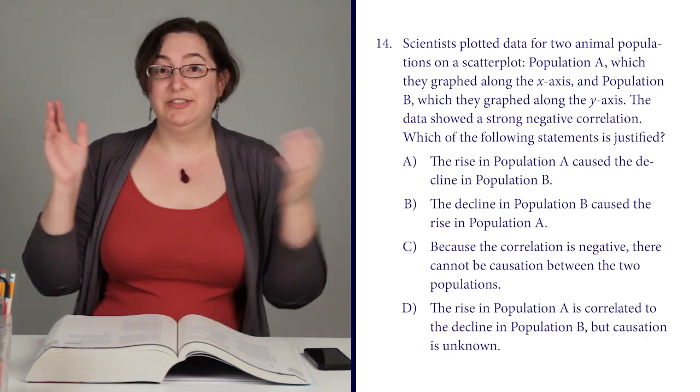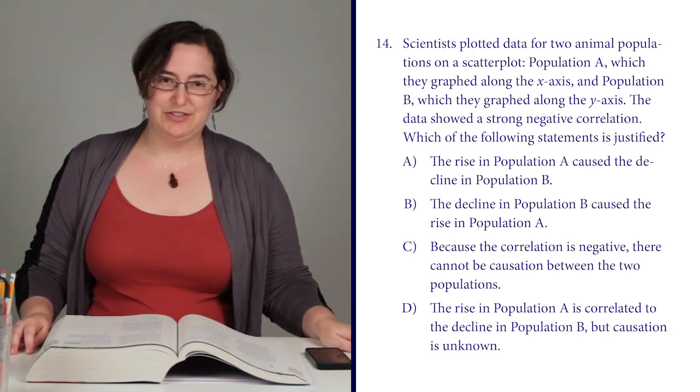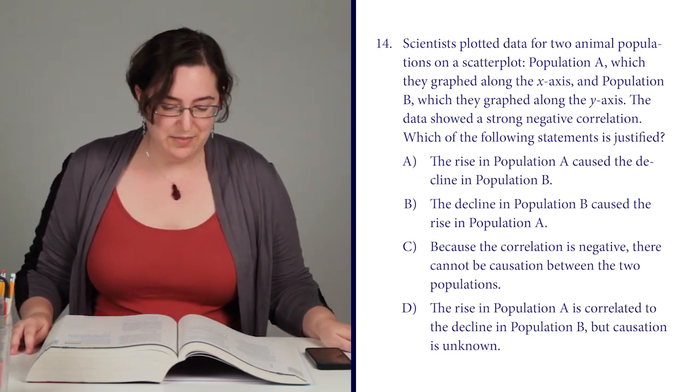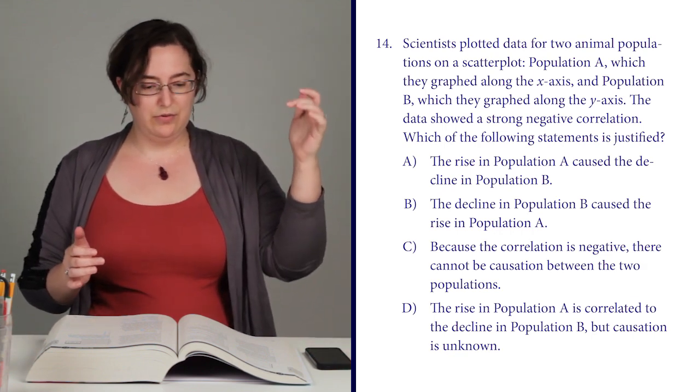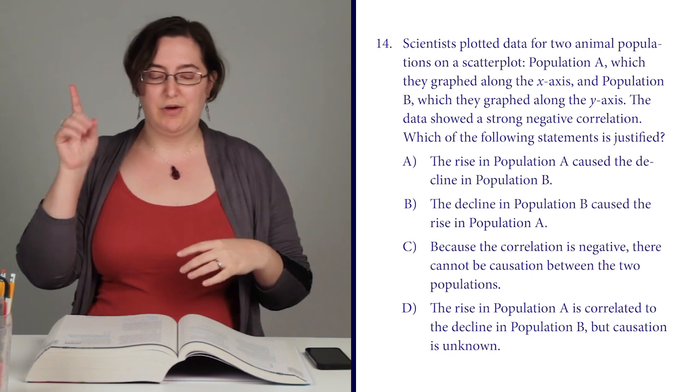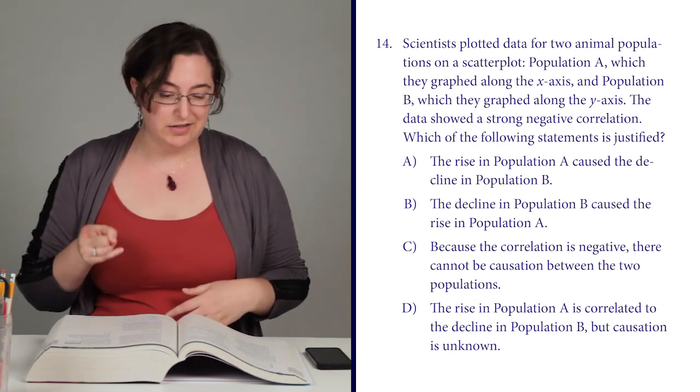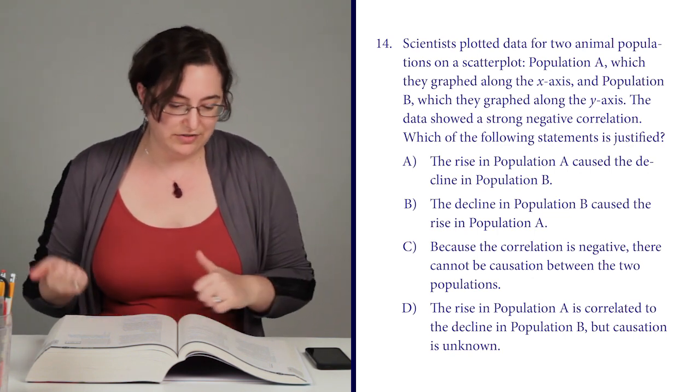Okay, so justified? I get this whole correlation versus causation thing all the time. So we need to show that one of them goes down at the same time that the other one is going up, but not necessarily that one caused the other.